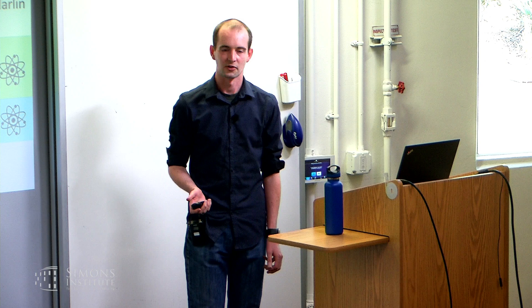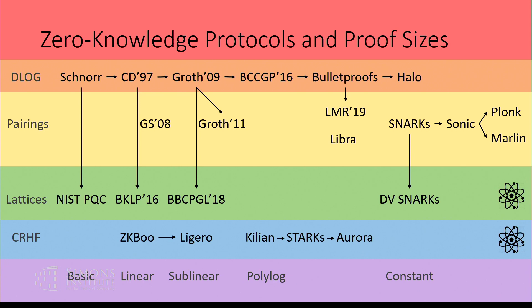Vertically, I've sorted them by different cryptographic assumptions. You can see a few there. Horizontally, they're sorted roughly by proof size — how succinct the proofs are for each system. And the arrows, at least in my mind, show how the different proof systems have influenced each other.